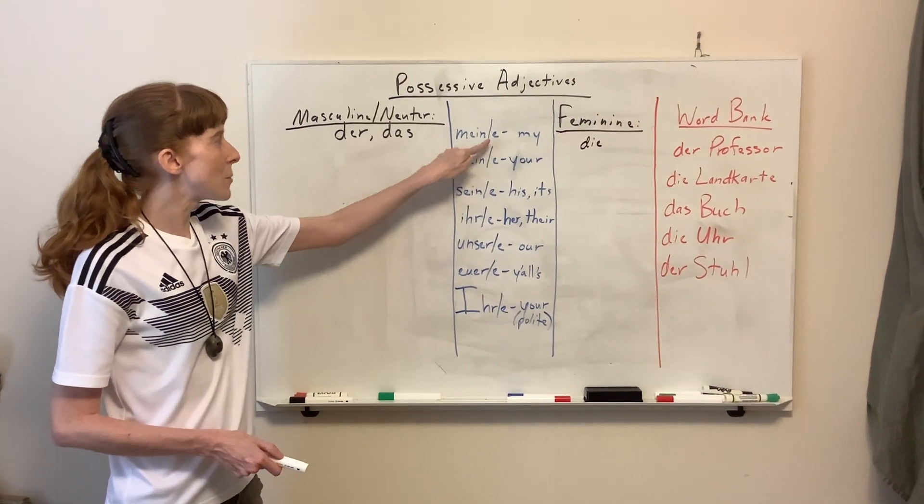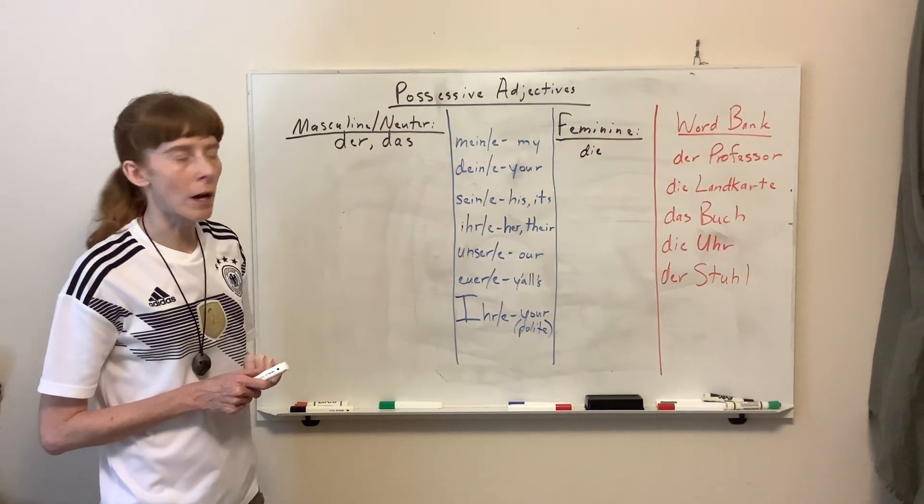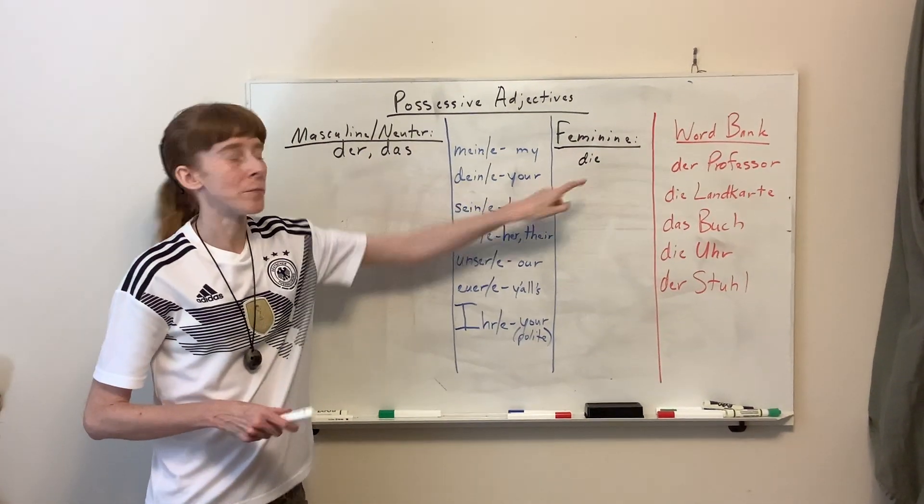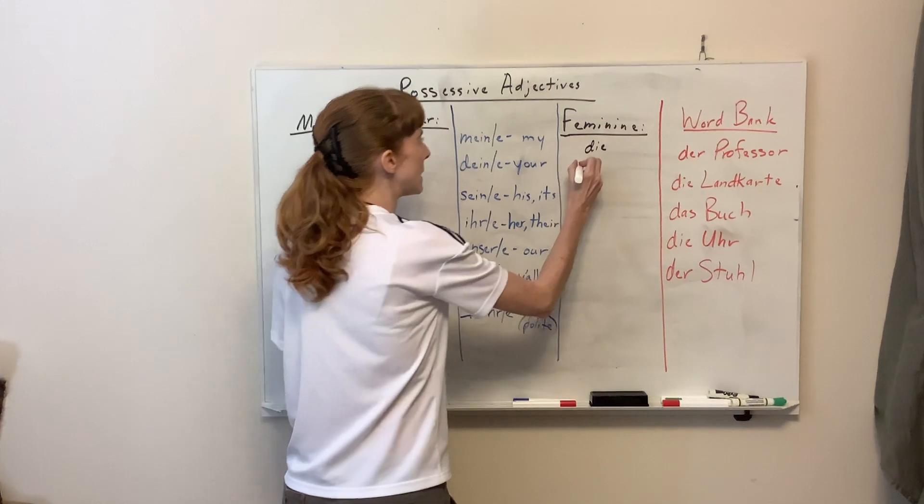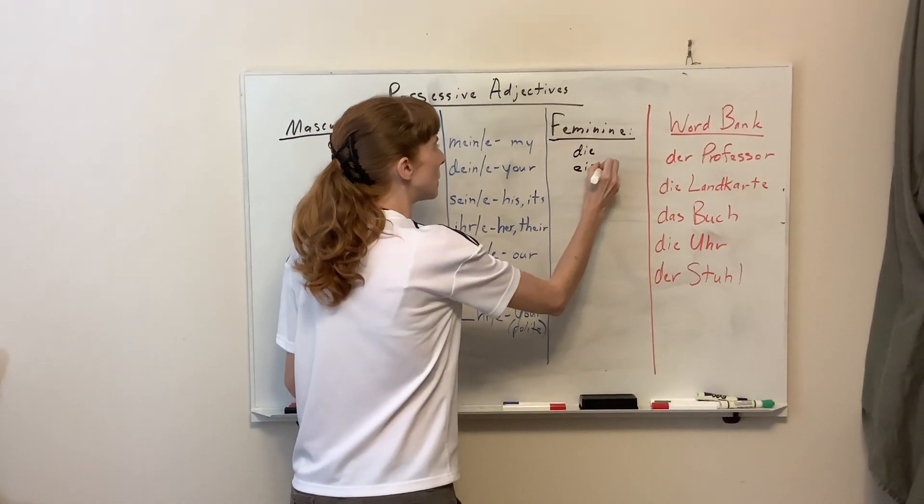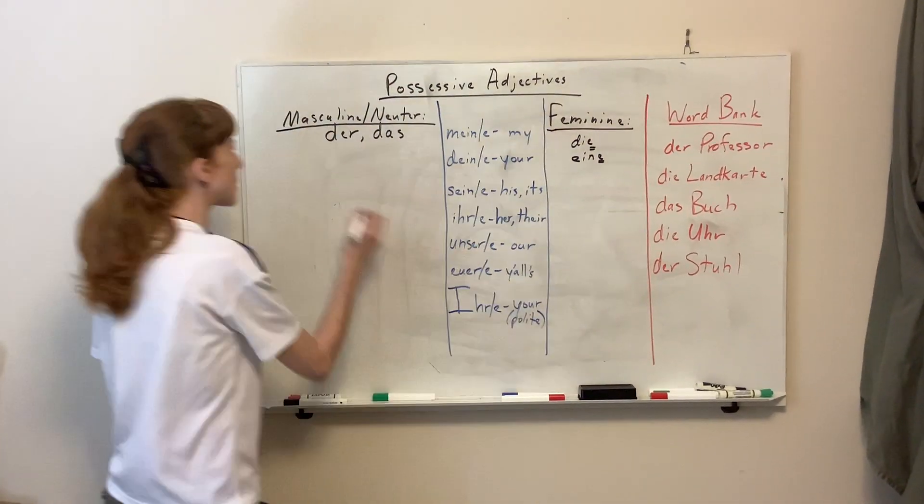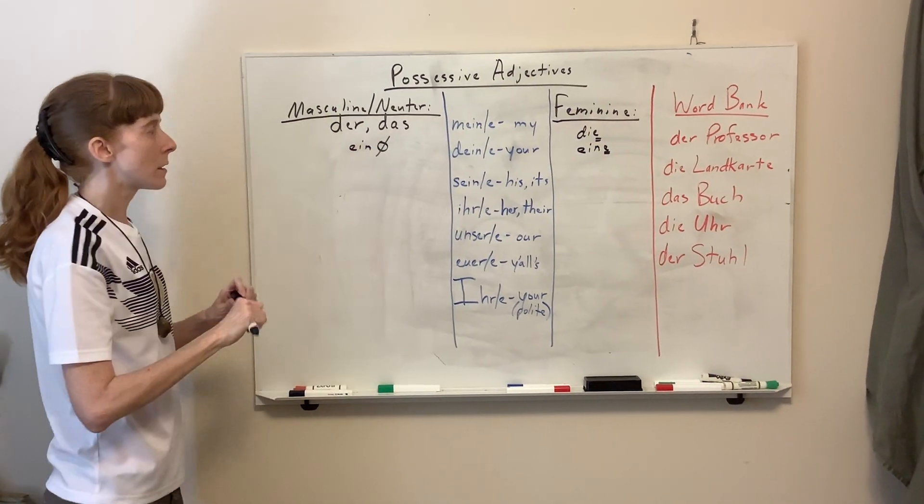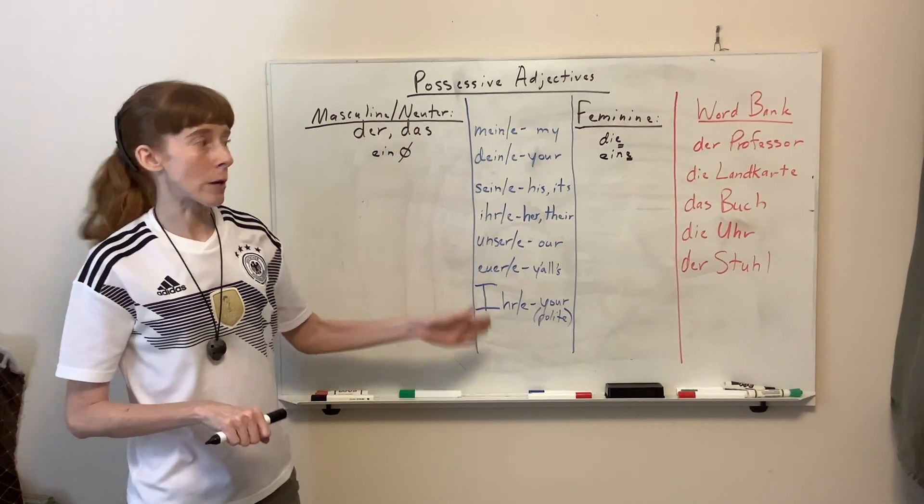And the thing is, sometimes it may have an e on the end and sometimes not. The time that it will have an e on the end is if it's feminine. So remember we had done eine that had the e on the end for feminine and we had done ein for masculine and neuter without an ending. And this works the exact same way.